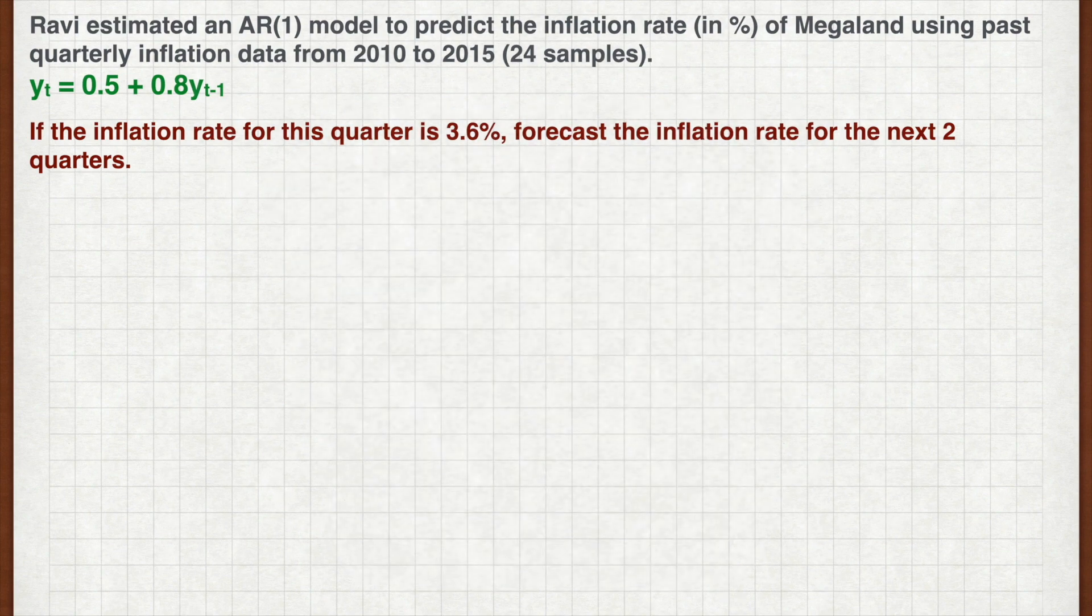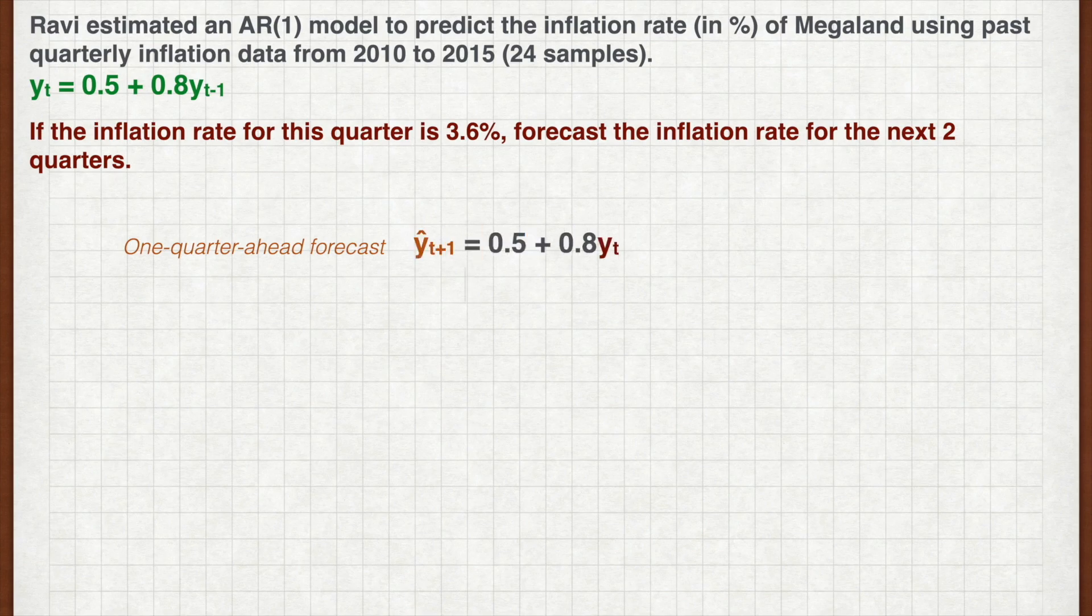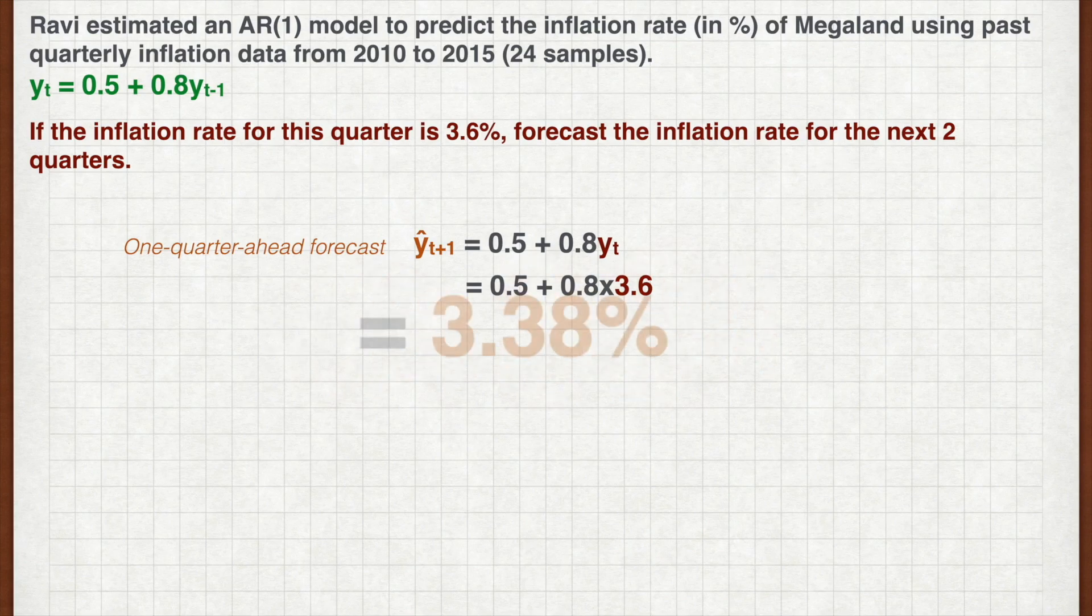And we're back. First, we calculate the one-quarter ahead forecast. We plug in the current inflation rate of 3.6% and we get a forecast of 3.38%.